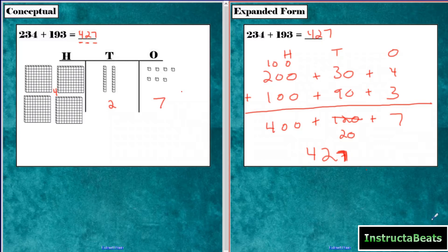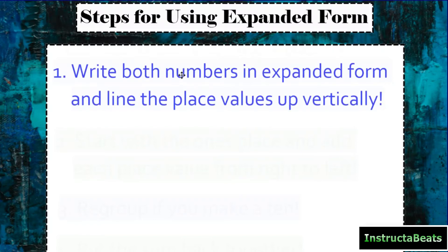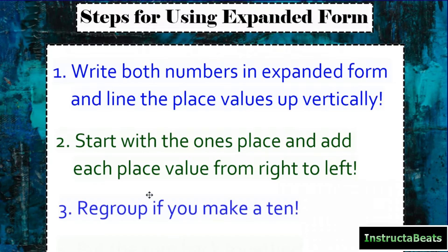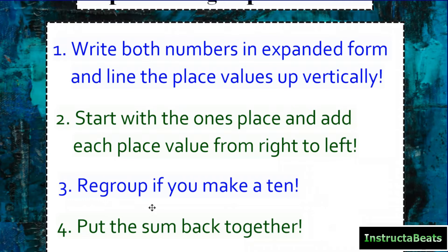Let's name the steps. When you're adding using expanded form, here are your steps. Step one: write both numbers in expanded form and line up the place values vertically. Step two: start with the 1s place and add each place value going from right to left. Step three: regroup if you make a 10 — if you make 10 10s, 10 100s, or 10 1s, regroup to the next place value. Step four: put the sum back together and write it in standard form.